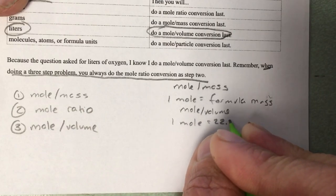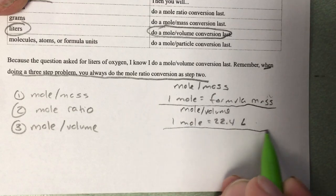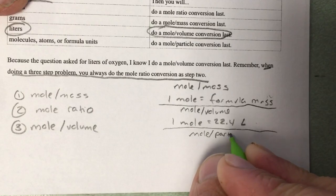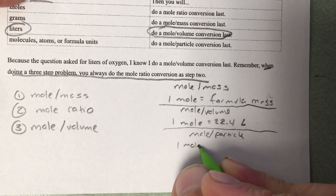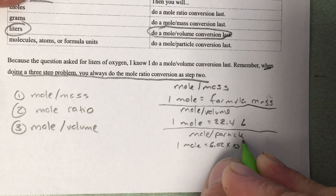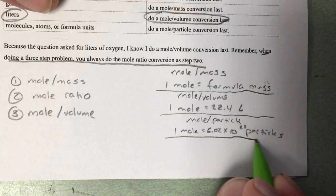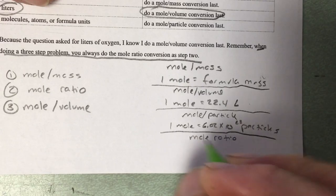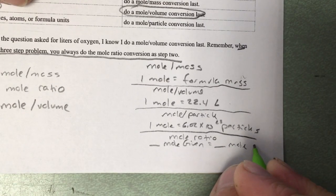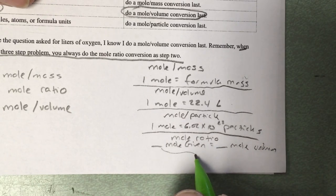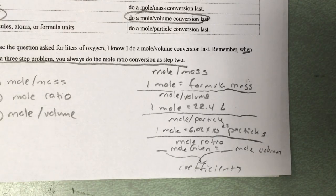Now we need to remember our equivalences. For a mole-mass conversion: one mole of your substance equals the formula mass (also called molar mass) in grams. For a mole-volume conversion: one mole of your gas equals 22.4 liters. For a mole-particle conversion — when dealing with molecules, atoms, or formula units — one mole equals 6.02 times ten to the twenty-third. For mole ratios, it's blank moles of the given equals blank moles of the unknown, and you fill in those blanks with the coefficients from your balanced equation.